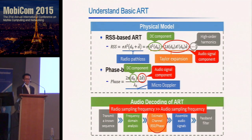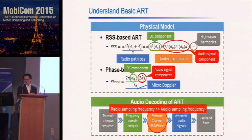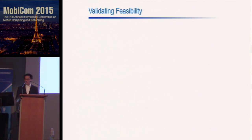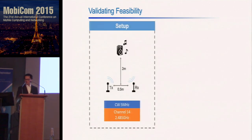One question is: the vibration of the loudspeaker is so small — how is it possible to recover it with good quality? Our key observation is that radio samples at a much higher rate than required for audio, so the oversampled audio signals will still contain those tiny vibrations with good quality. We verify this design with a feasibility experiment, setting up the loudspeaker two meters away from a pair of transceivers, transmitting a continuous wave at 5 MHz using channel 14.